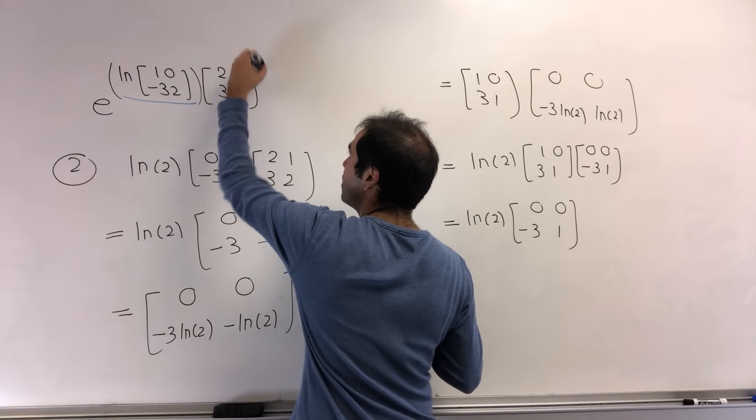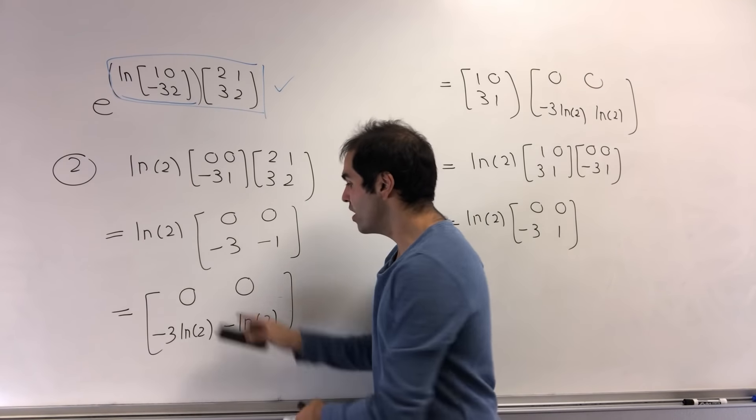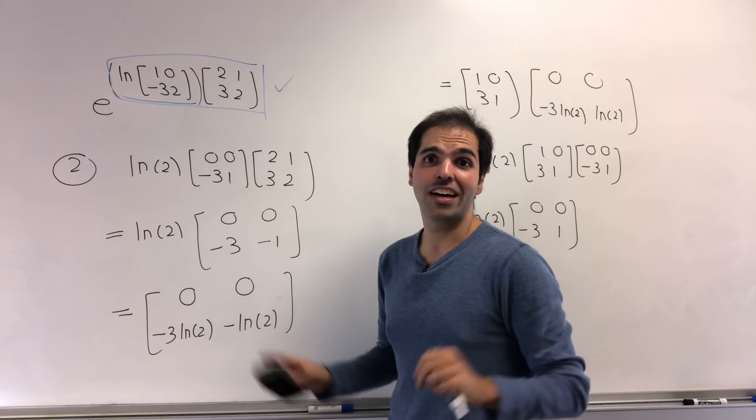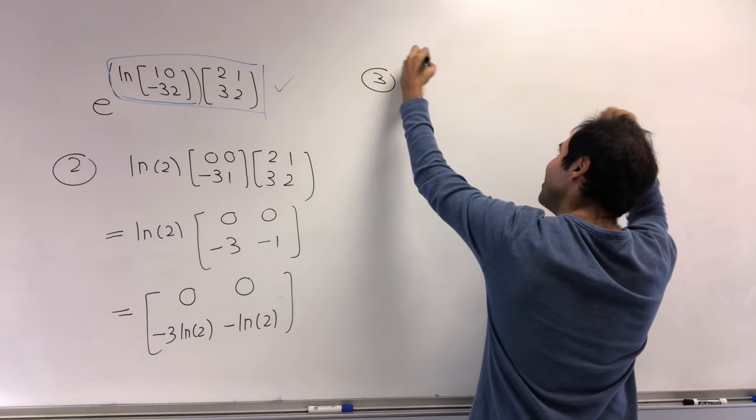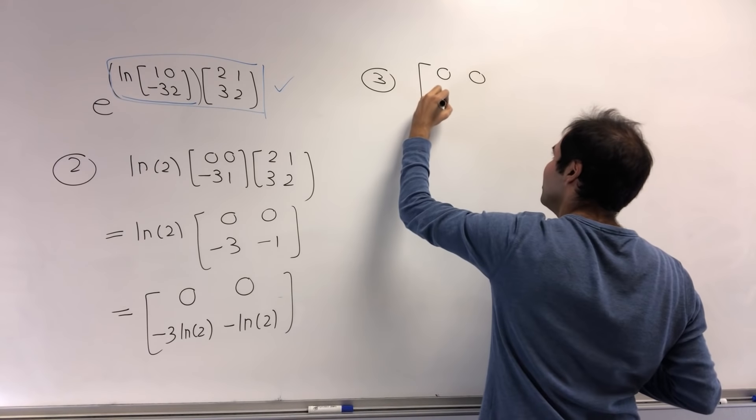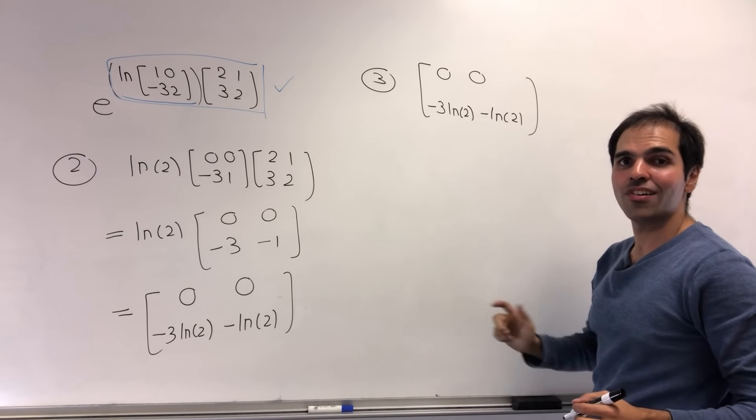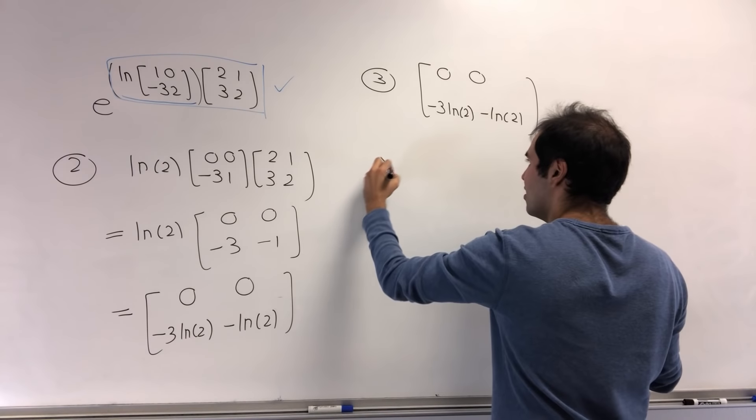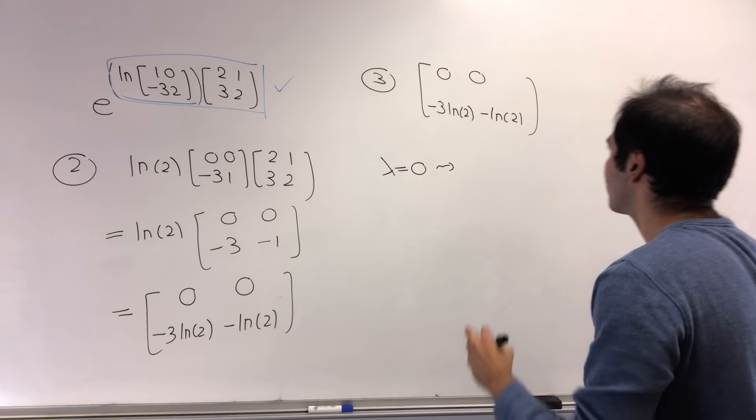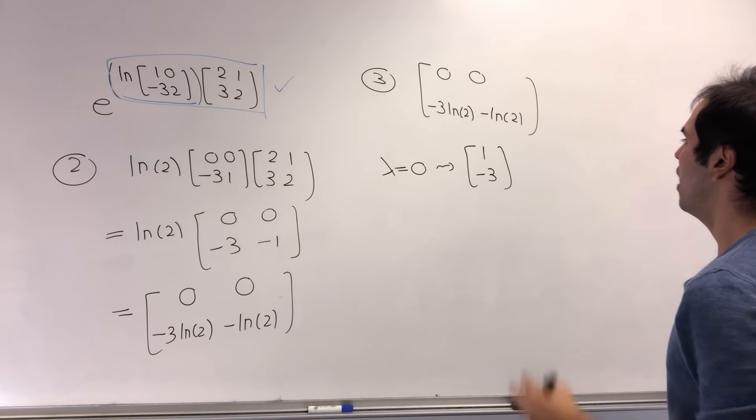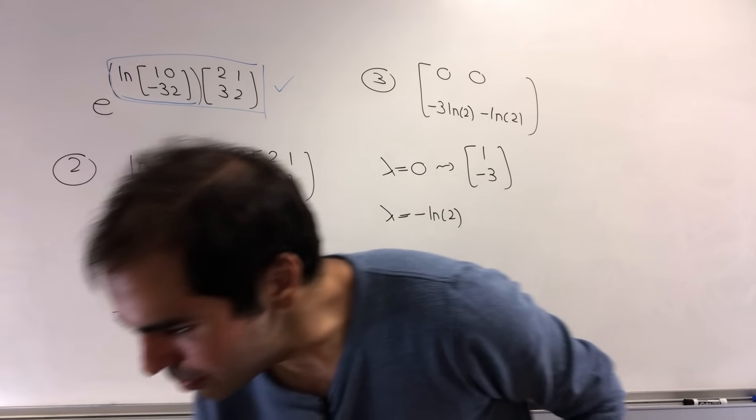Great. So we found ln of that matrix, we multiplied this by 2, 1, 3, 2. And last but not least, we want to find e to that matrix. So what you have to do here is you have to exponentiate, so you have to diagonalize. All right, and again, just as before, let me tell you the eigenvalues and eigenvectors. This is also triangular, so the eigenvalues are just 0 and minus ln of 2. And I believe for lambda equals 0, an eigenvector is simply 1 minus 3. And for the eigenvalue lambda is minus ln of 2, I believe an eigenvector is simply 0, 1.